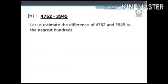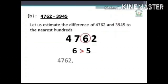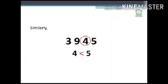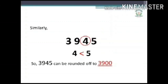Let us take up one more example: 4762 minus 3945. In 4762, the digit at the tens place is 6, which is greater than 5, so add 1 to 7 in the hundreds place — 4762 can be rounded off to 4800. Similarly, in 3945, the digit at the tens place is 4, which is less than 5, so 3945 can be rounded off to 3900.